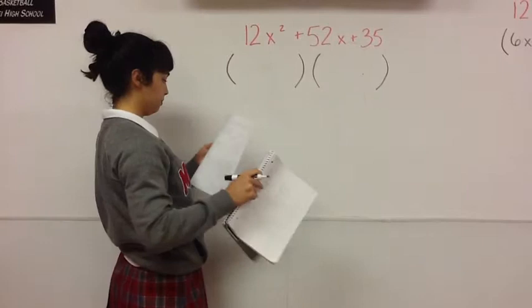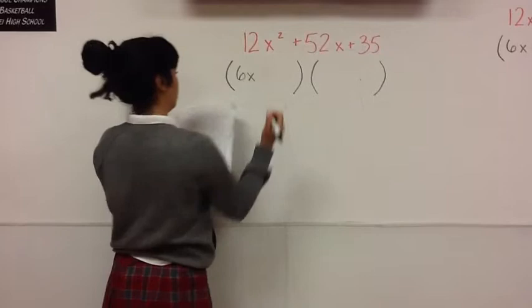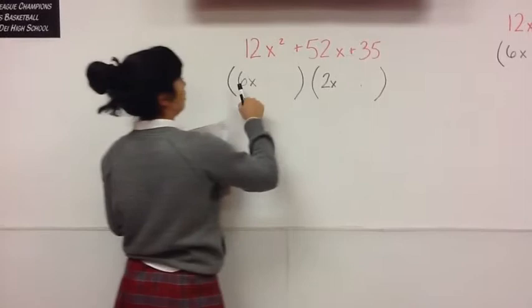In this case, we have a trinomial. So you must first look at the first term. 6x times 2x equals 12x squared.